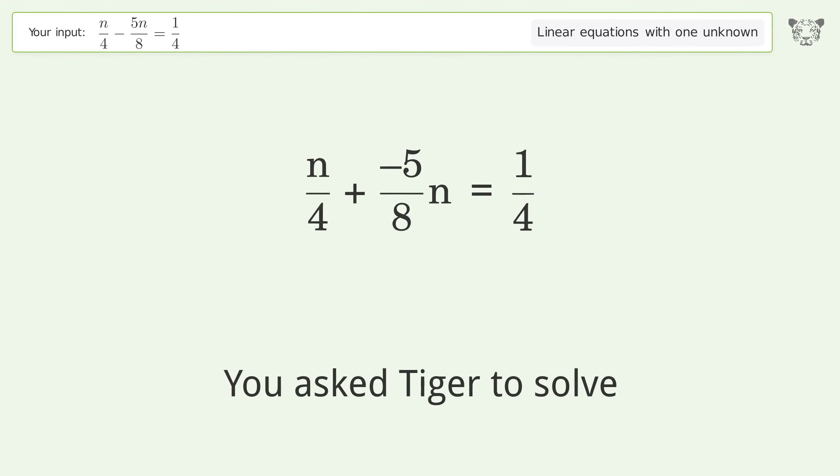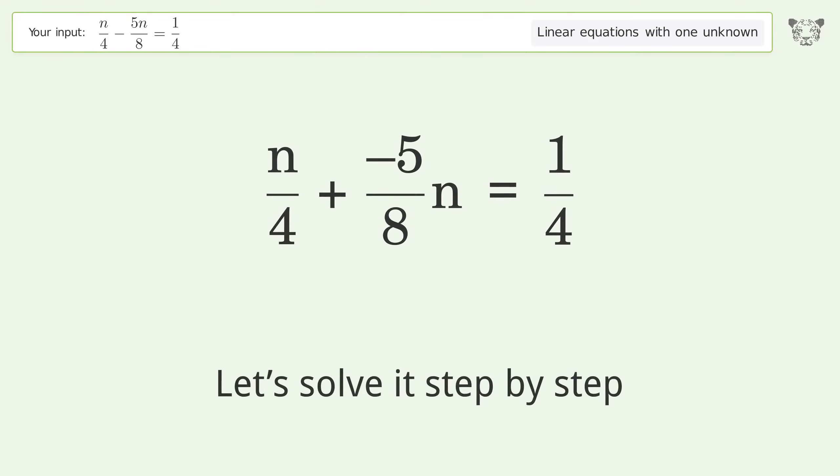You asked Tiger to solve this. It deals with linear equations with one unknown. The final result is n equals negative 2 over 3. Let's solve it step by step.